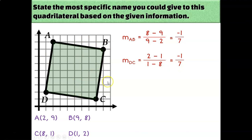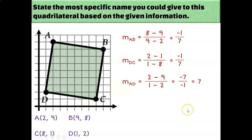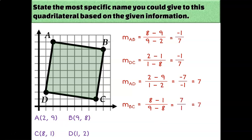Let's figure out the slopes of the other two segments. The slope of AD is (2 − 9)/(1 − 2) = −7/−1, which reduces to positive 7. You could also count that — going up 7 and to the right 1. One more: the slope of BC is (y₂ − y₁)/(x₂ − x₁), and I get 7/1, which is 7.